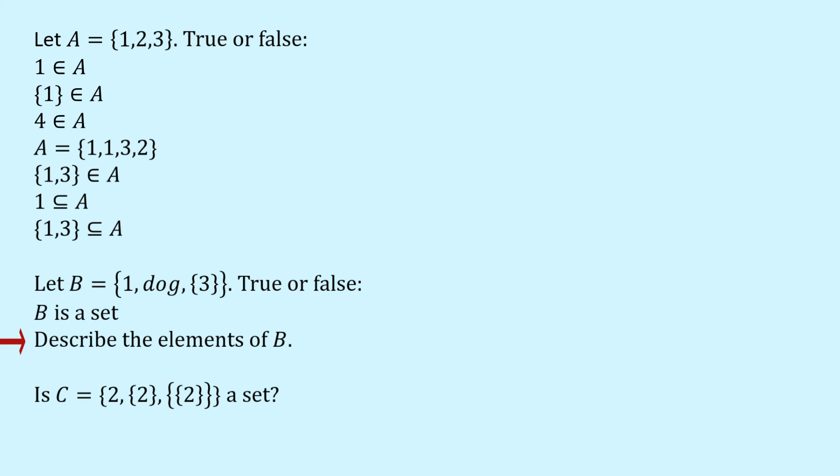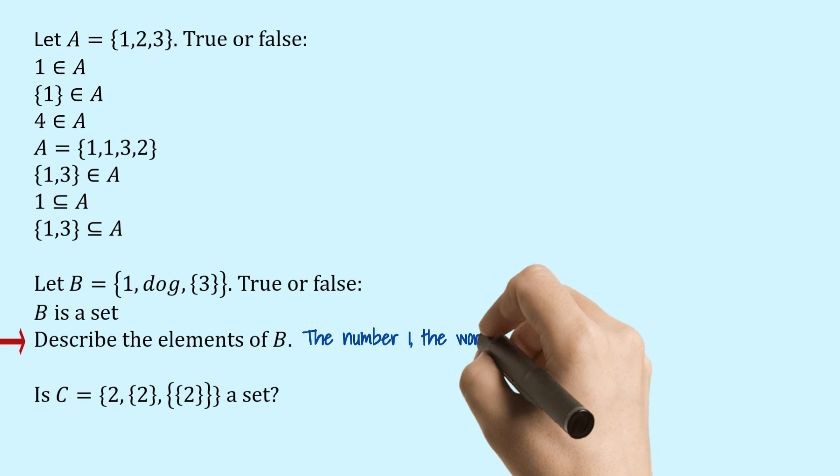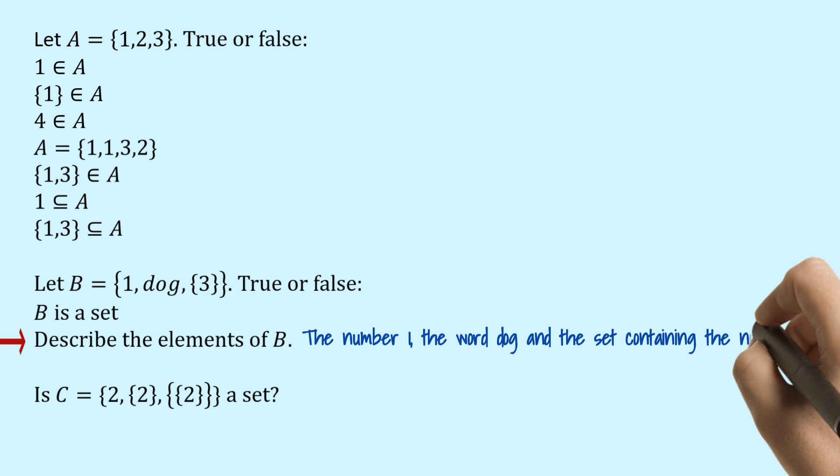And the elements of B, well I've just said what they are. The number 1, the word dog and the set containing the number 3.